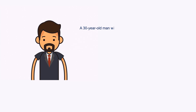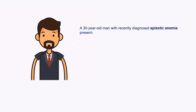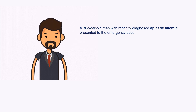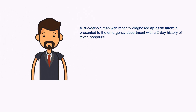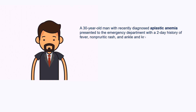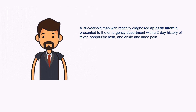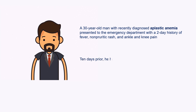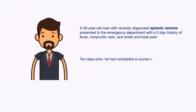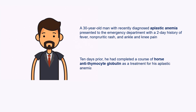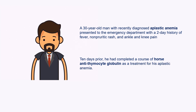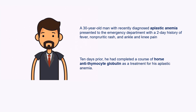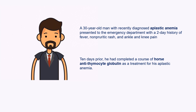A 30-year-old male with recently diagnosed aplastic anemia presented to the emergency department with a 2-day history of fever, non-pruritic rash, and ankle and knee pain. 10 days before the onset of the symptoms, he had completed a course of horse antithymocyte globulin as treatment for his aplastic anemia.